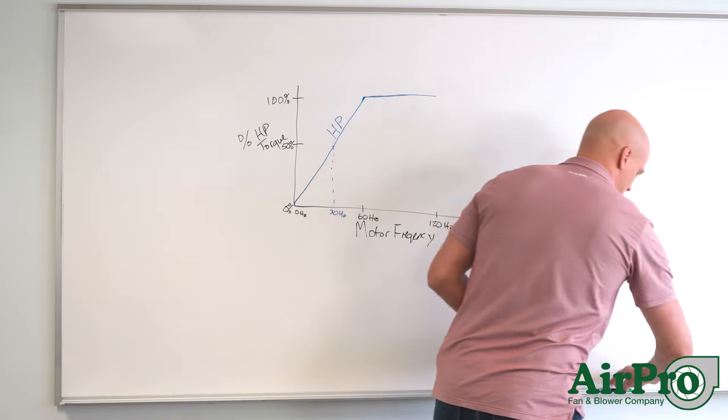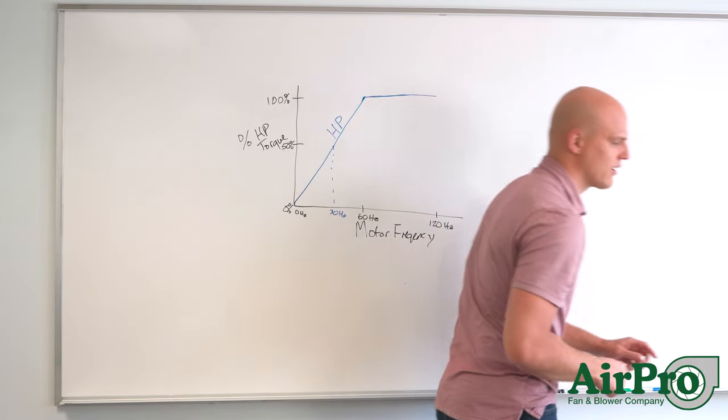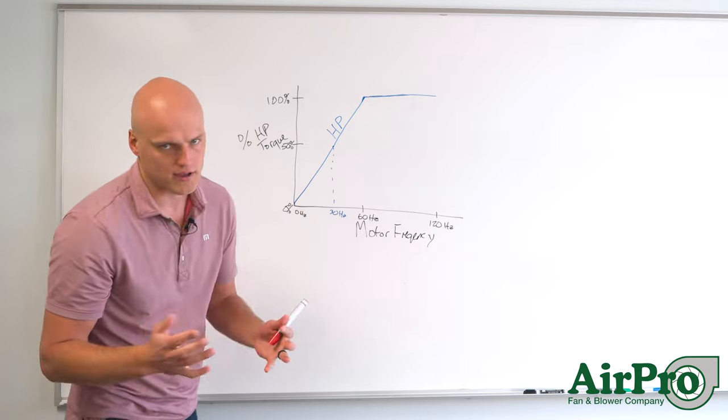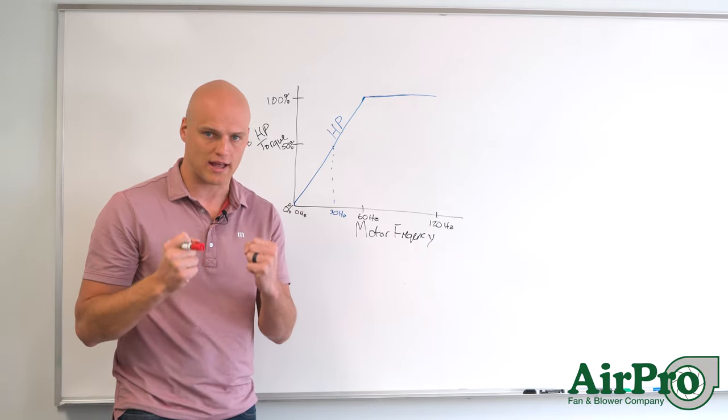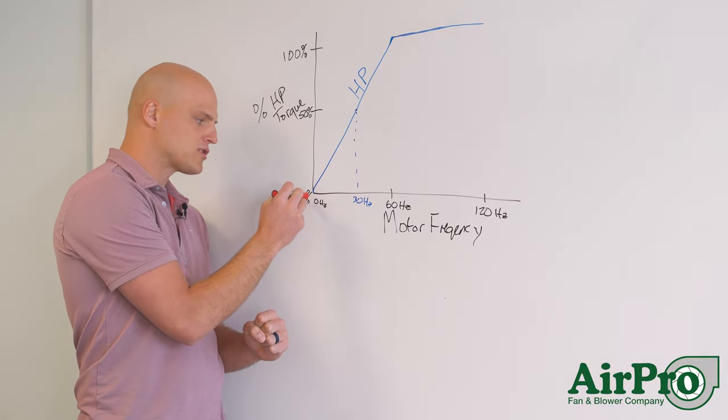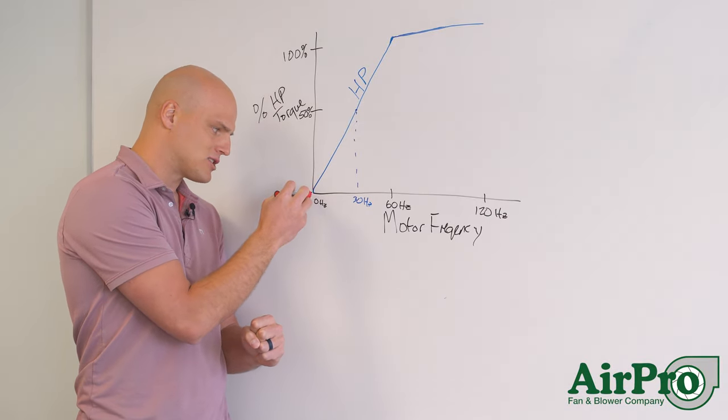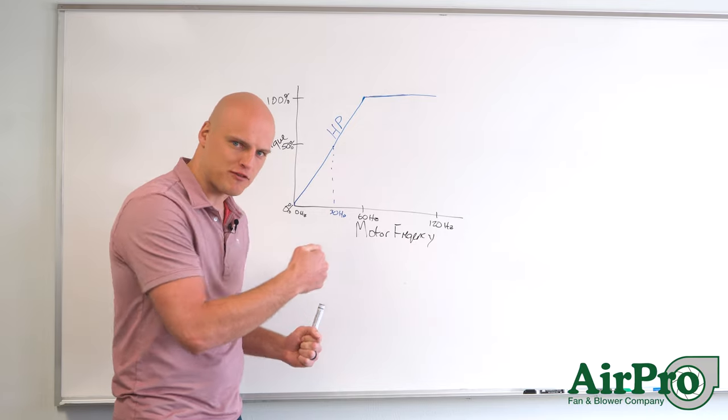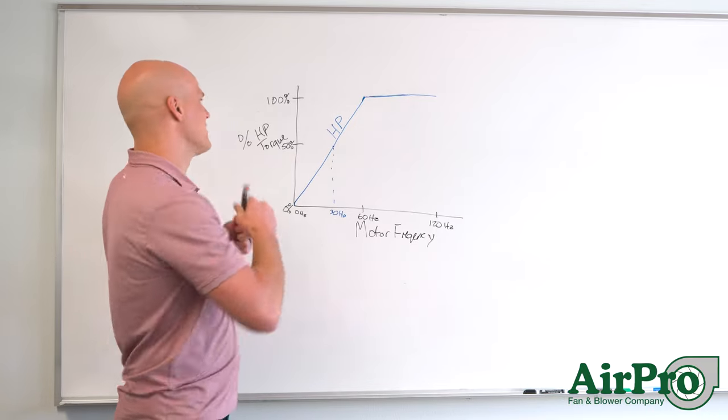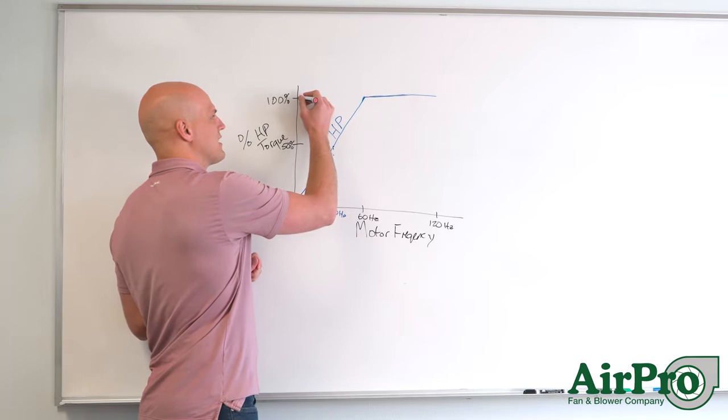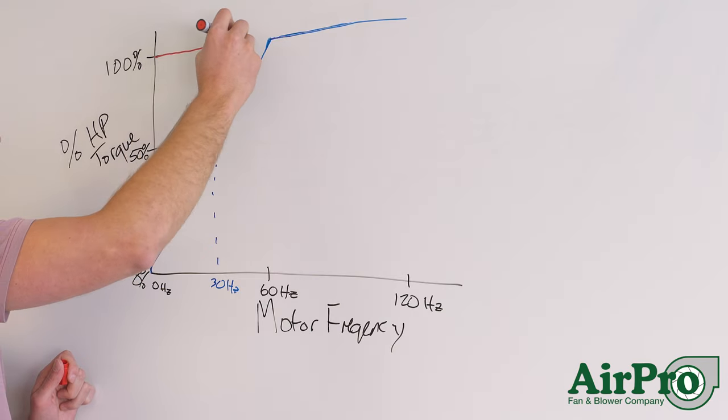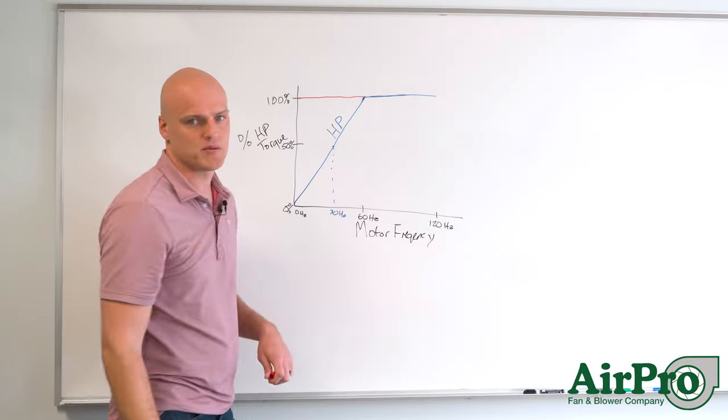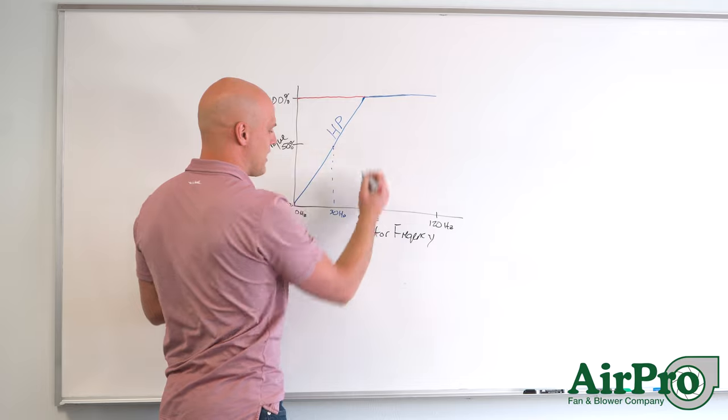Okay the second curve we're going to write on here is the torque available. Again what we care about with industrial fans is the torque at startup. So we want the most torque we can when this thing is just past zero hertz and you're firing it up. Good news your torque starts at a hundred percent. So again from zero hertz to 60 hertz we have a hundred percent of the available torque from the motor all the way out here to 60 hertz.